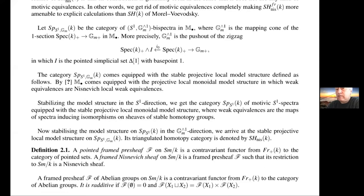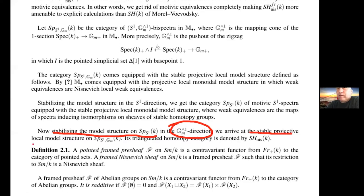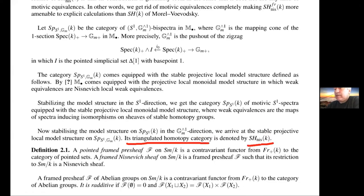Now stabilizing the model structure on Spectra_{S^1}(k) in the Gm∧1 direction, we arrive at the stable projective local model structure on the category of bispectra. Its triangulated homotopy category is denoted SH_Nis(k), and it is this triangulated category SH_Nis(k) which is the very basis for all our further definitions.